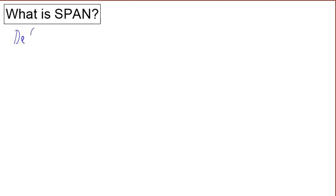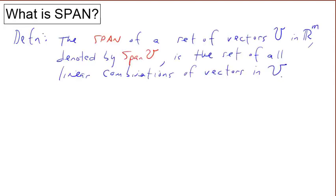What is span? Here's the definition. The span of a set of vectors V in R^m, denoted span(V), is the set of all linear combinations of vectors in V.